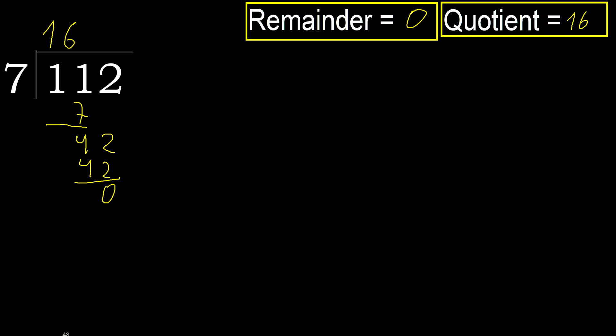112 divided by 7 equals 16. 11, 16, 11, 16.